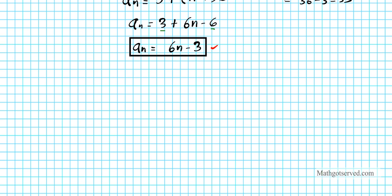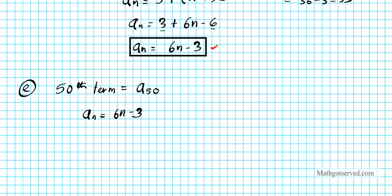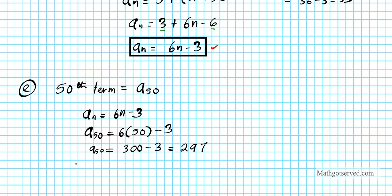Finally, part E: find the 50th term, A_50. Using our explicit formula A_N = 6N − 3, we substitute N = 50: A_50 = 6(50) − 3 = 300 − 3 = 297. The 50th term is 297.